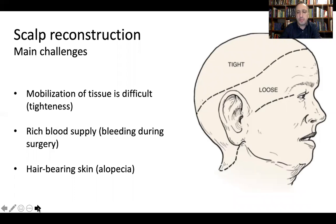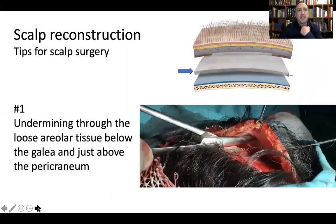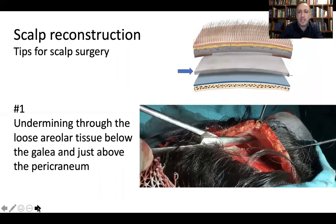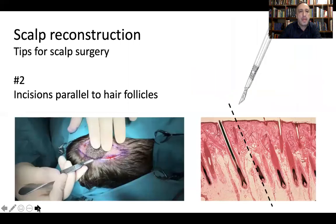Some general tips for scalp surgery: the first tip is undermining through the loose areolar tissue below the galea and just above the pericranium. At that plane, we can undermine quite easily — almost with no cutting. We can just separate the tissue, and at that level we should not encounter any important vessel. As you see in the image, that undermining produces no bleeding at all.